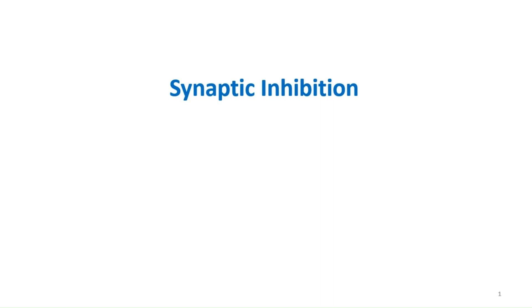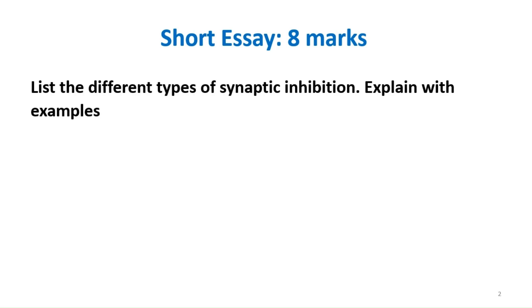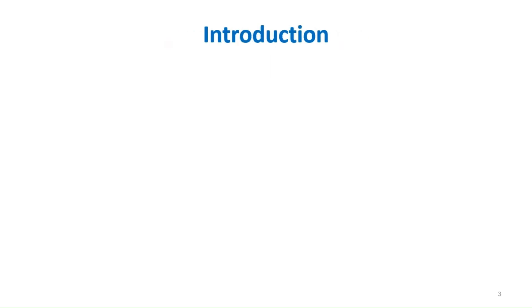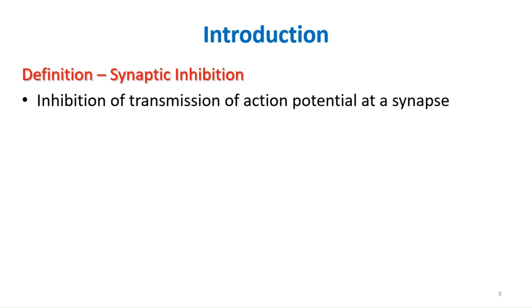In this video we will be discussing synaptic inhibition. It is usually asked as a short essay of 8 marks, with the typical question being: list the different types of synaptic inhibition and explain with examples. You have to start your answer with an introduction that includes the definition — synaptic inhibition is basically the inhibition of transmission of action potential at a synapse.